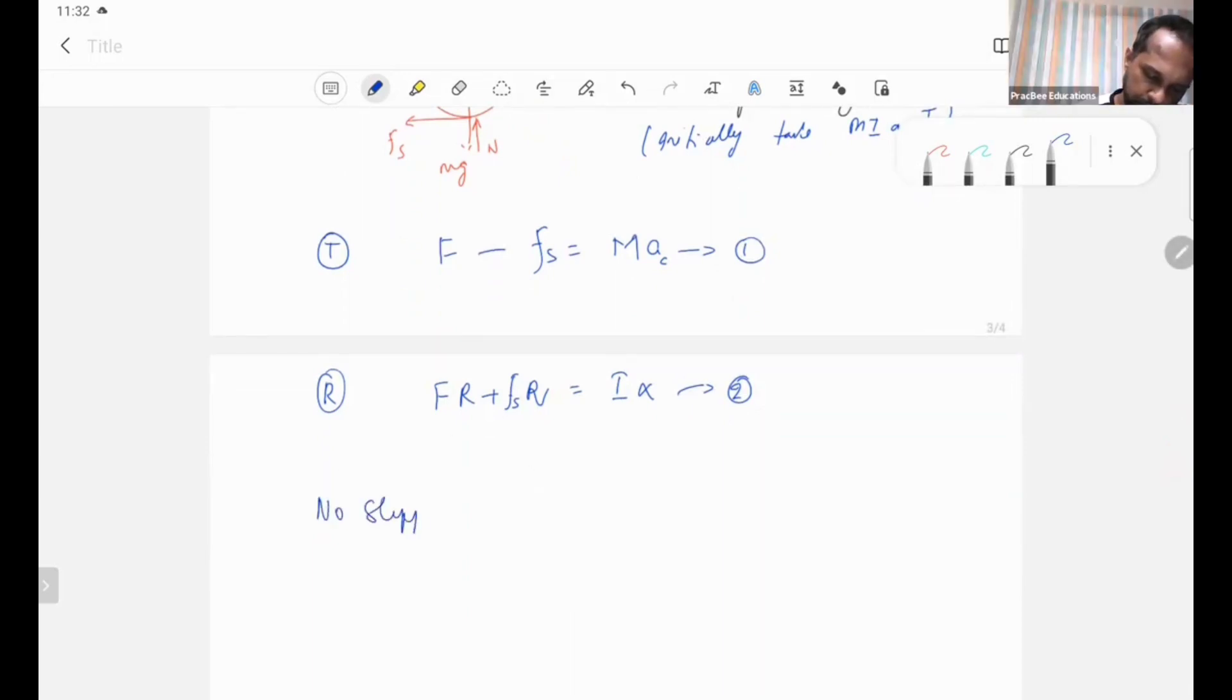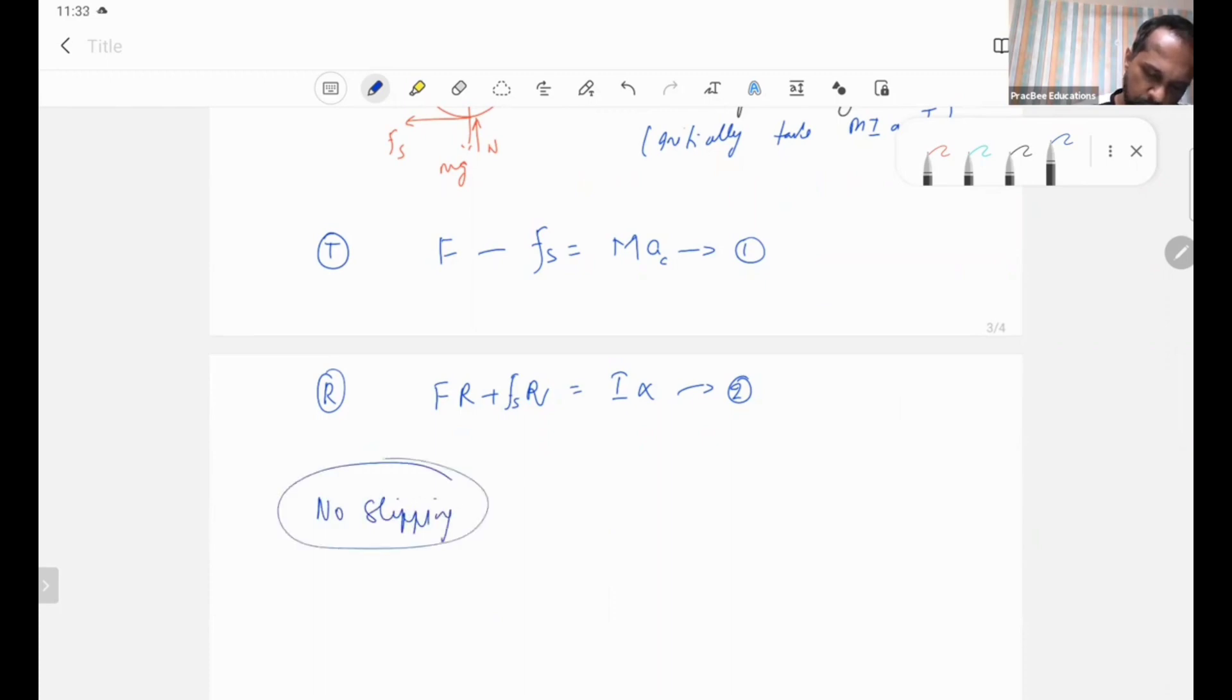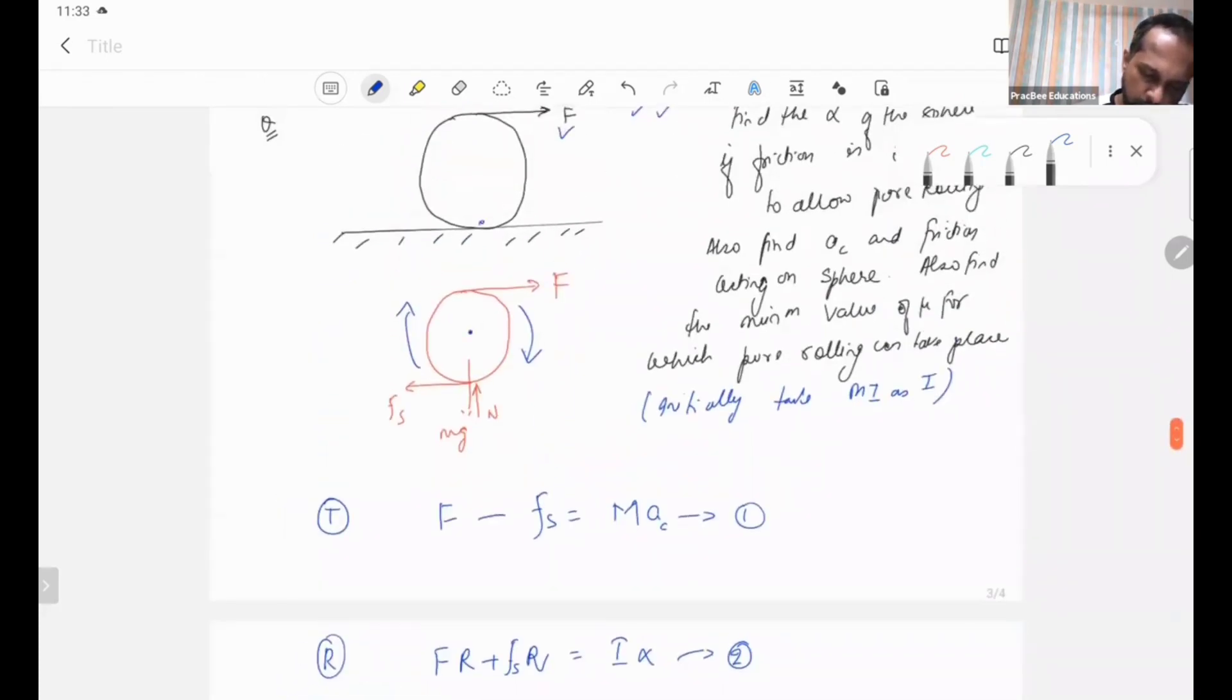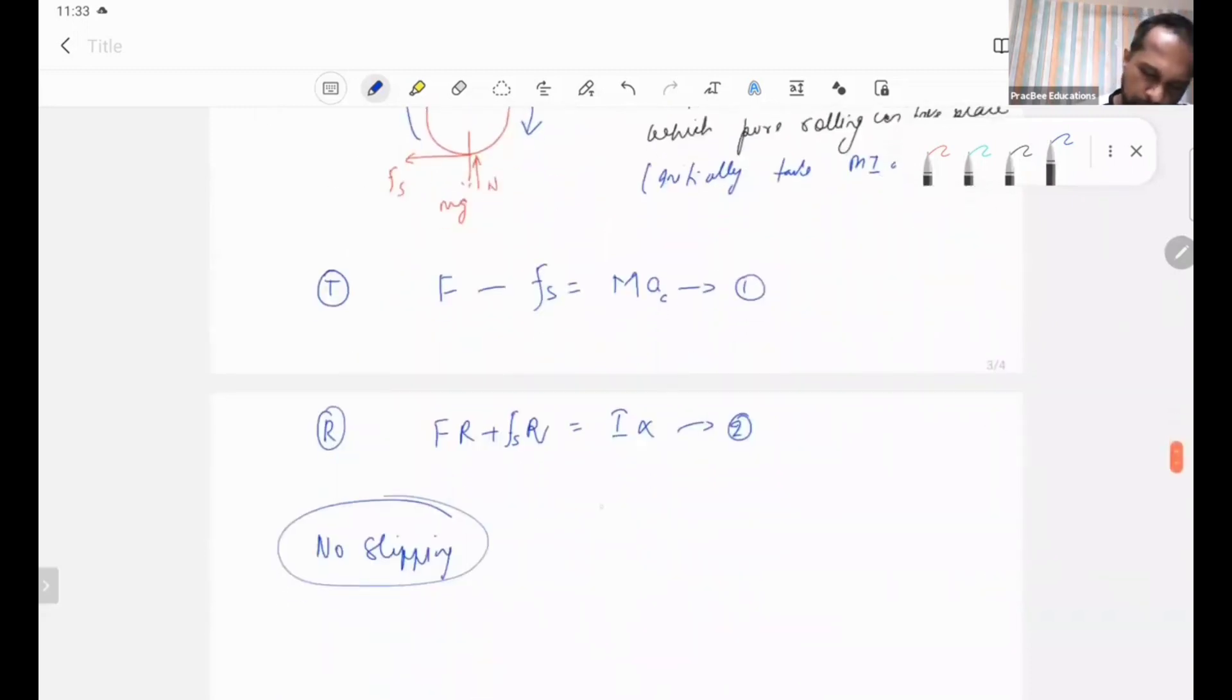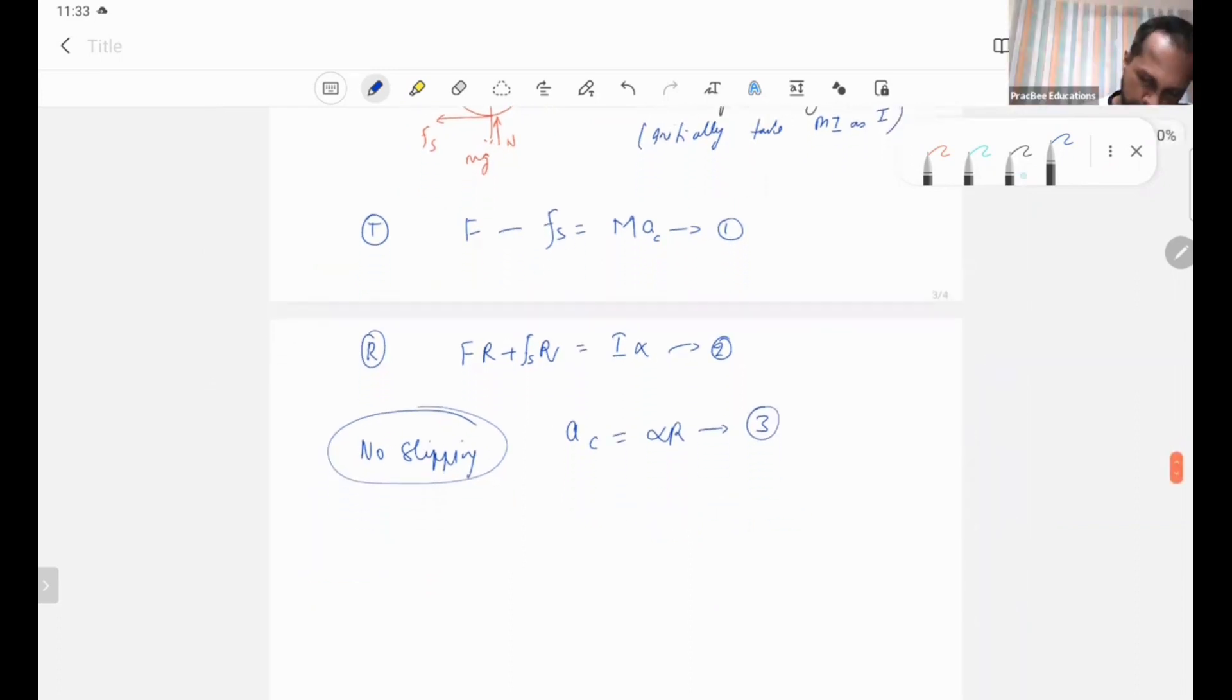Third one, no slipping condition. Which is the contact surface? The bottom most point is the contact surface. So I will say at the bottom most point, Ac equals alpha R. These are the three equations that we have to write. Let's try to solve these three equations.